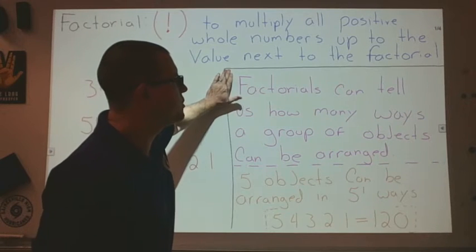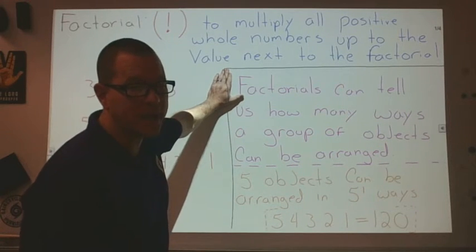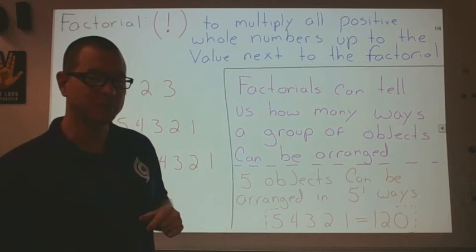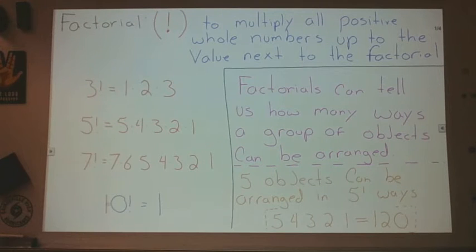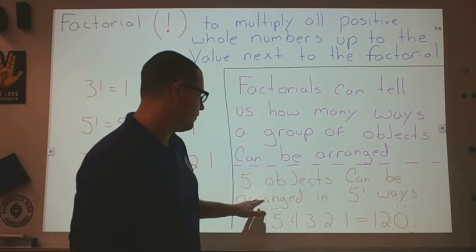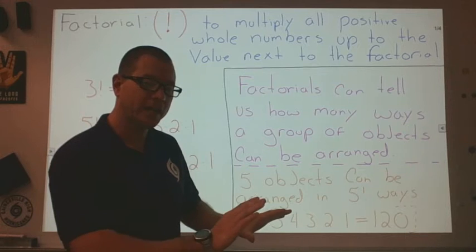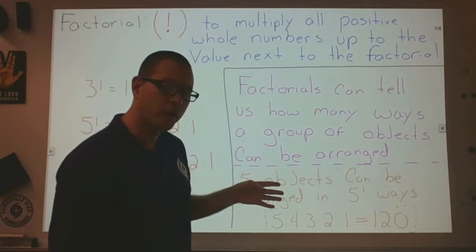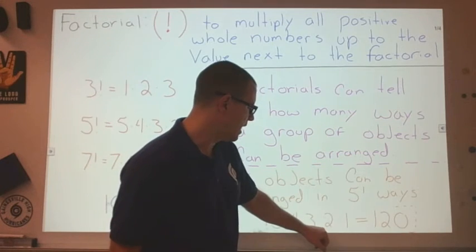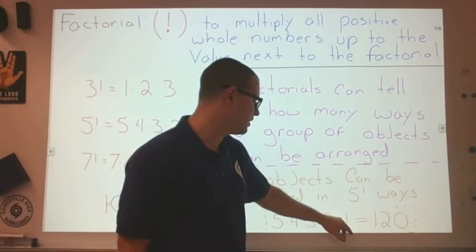The way that factorials are useful to us right now is that factorials can tell us how many ways a group of objects can be arranged. Let's say we have 5 objects. You could choose any of the 5 objects for the first one. But then your second choice only has 4 options, and your third choice only has 3, your fourth choice, and your last choice. So what we end up with is the total number of ways we could arrange them is 120.